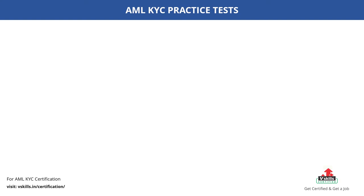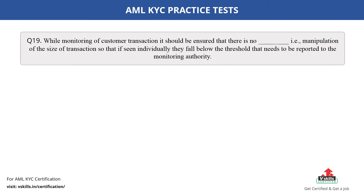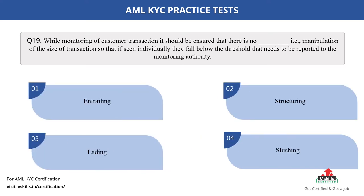Question number 19. While monitoring of customer transaction, it should be ensured that there is no dash — that is, manipulation of the size of transaction so that if seen individually, they fall below the threshold that needs to be reported to the monitoring authority. Fill in the blank. The options are: A. Entrailing; B. Structuring; C. Lating; D. Slushing. The correct answer is option B.